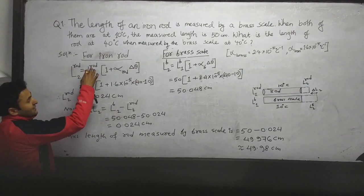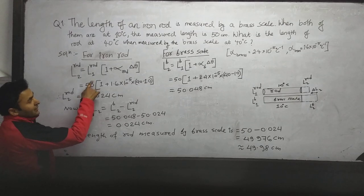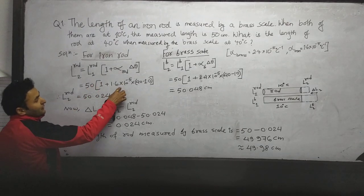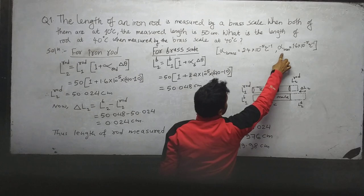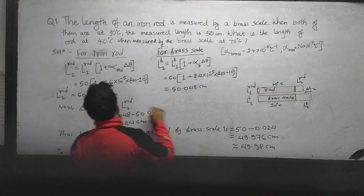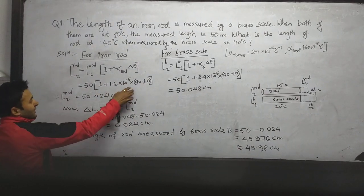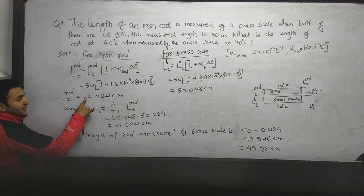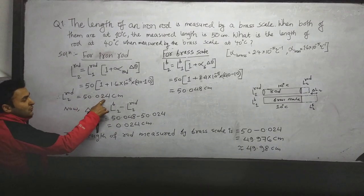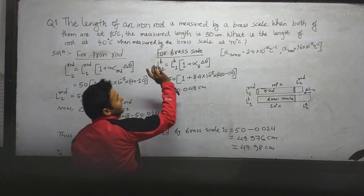The value of L1_rod is 50 cm, and the value of α_iron is 1.6 × 10⁻⁵. By calculating using a calculator, we get L2_rod = 50.024 cm.